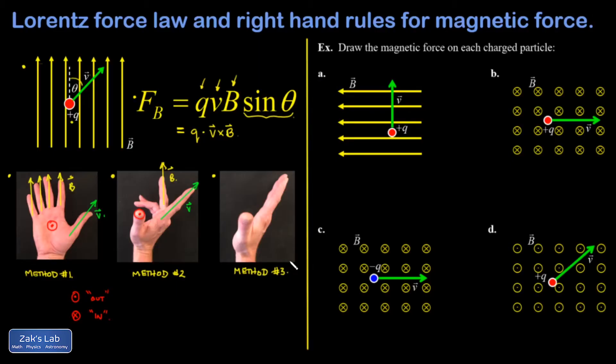Now method number three is the one that I actually use in practice. And I think it's because it's more the way that you visualize a cross product in multivariable calculus. That's probably how it started. And it's very similar to method two. It's just that instead of putting your index finger one way and your middle finger the other, you treat it as a motion.